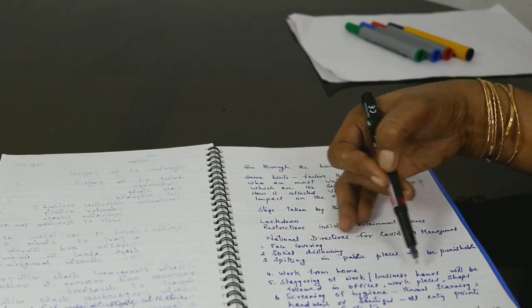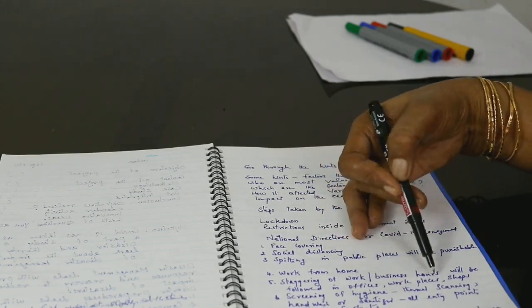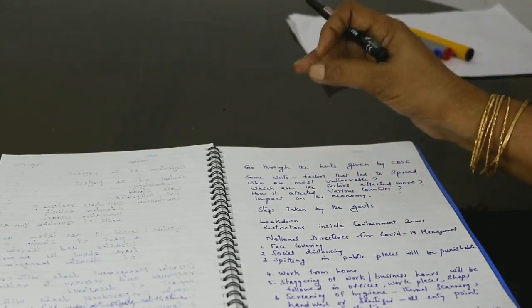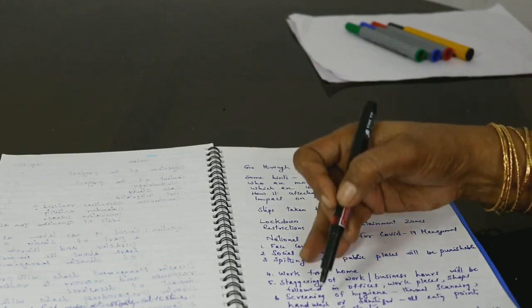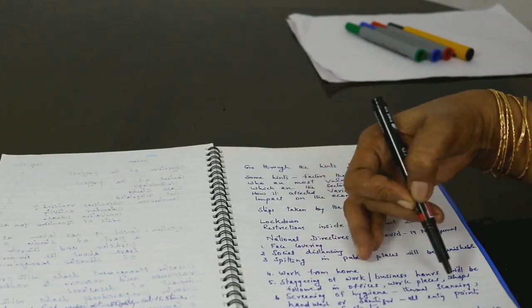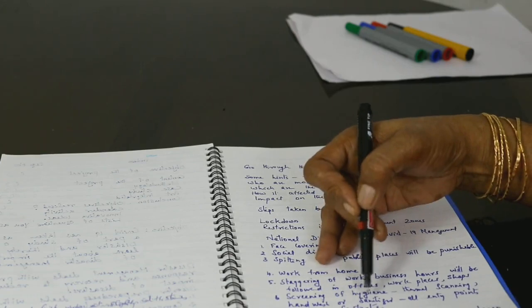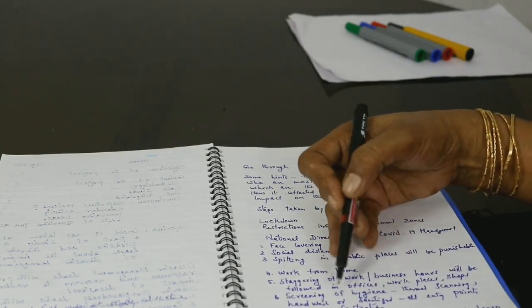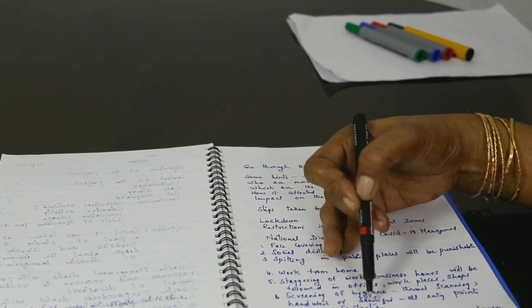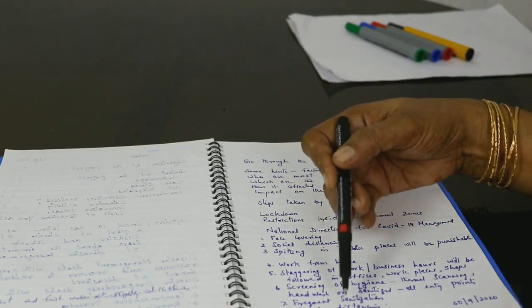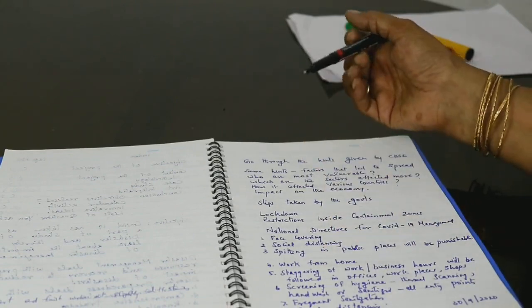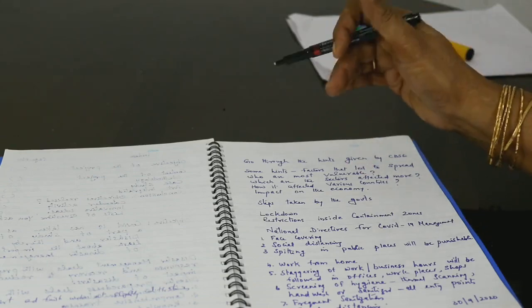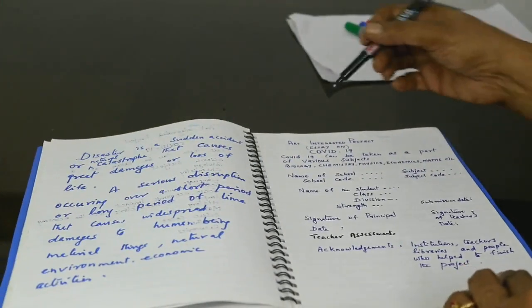Then work from home. Then staggering of work, business surveys will be followed in offices, workplaces, shops. Staggering means a slight changes in the timing of the office. Then screening of hygiene, that is thermal scanning, hand wash or sanitizers, all entry points, all major entry points, it should be there. Then frequent sanitization, then social distancing. So these are the major steps the government at the state level and the central level are taking. It can be taken as a part of different subjects.